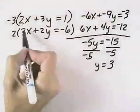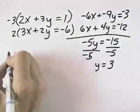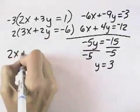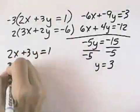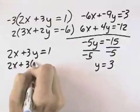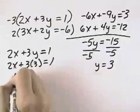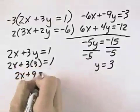Now I can go back to either of my original equations to solve for x. I'll choose the first original equation, and in place of y, I'm going to substitute 3. So I have 2x plus 3 times 3 equals 1. 2x plus 9 equals 1.